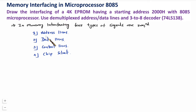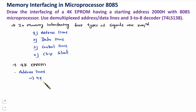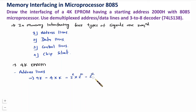First, identify address lines and data lines. We have been given 4KB of EEPROM. With 4K, that means 4 × K, where 4 is 2² and K is 2¹⁰, giving 2¹² total locations. So 2 to the power 12 means 12 address lines are required.